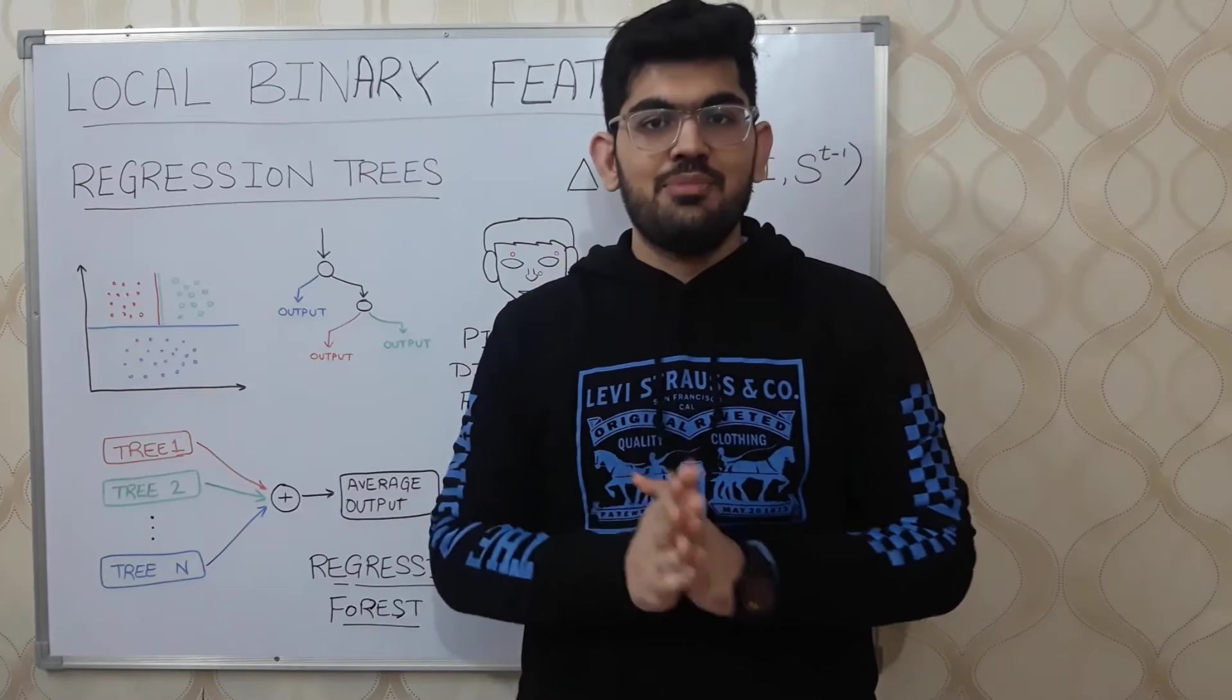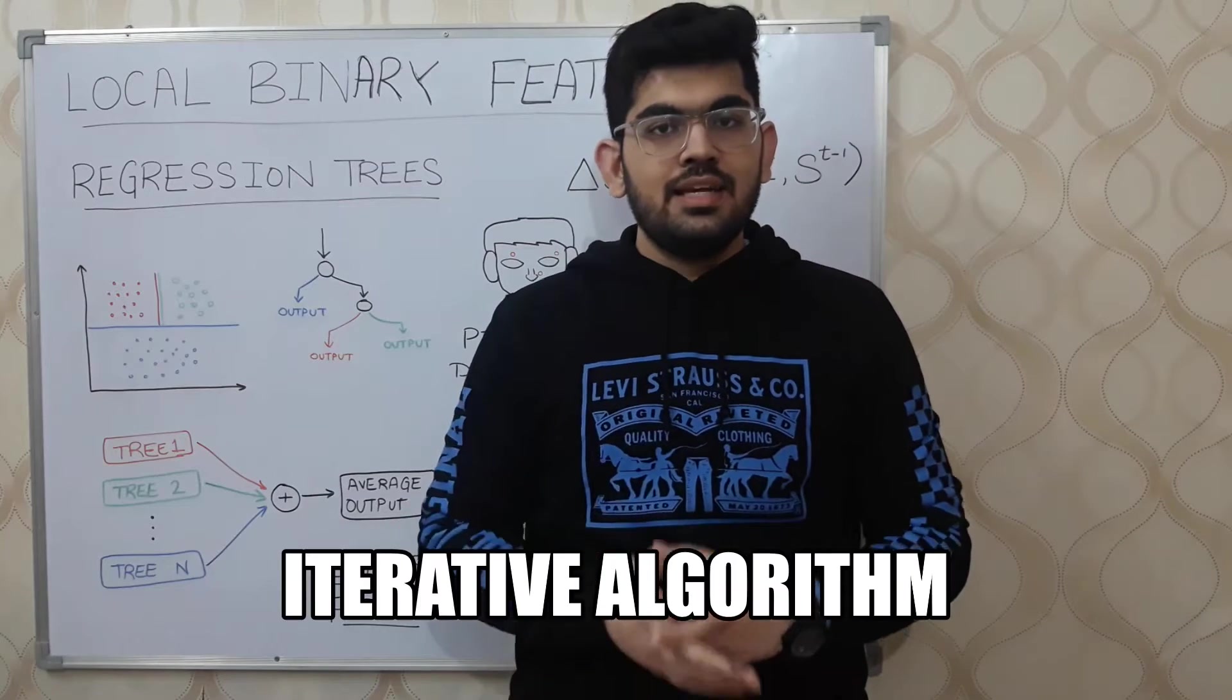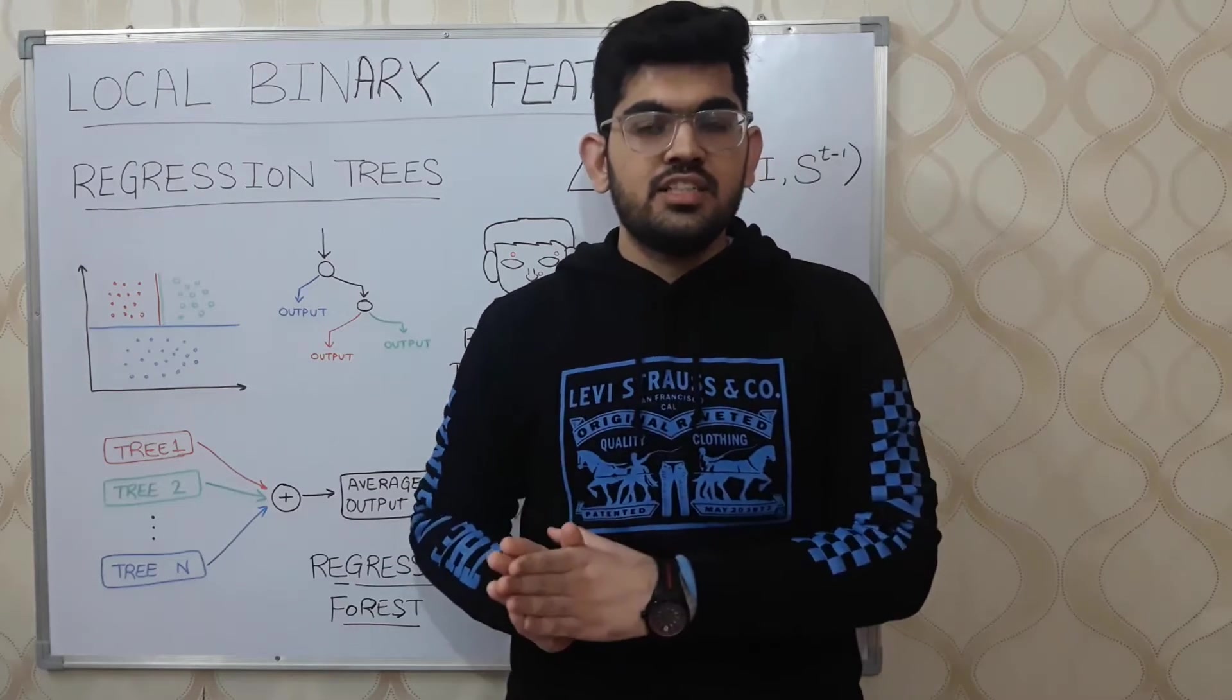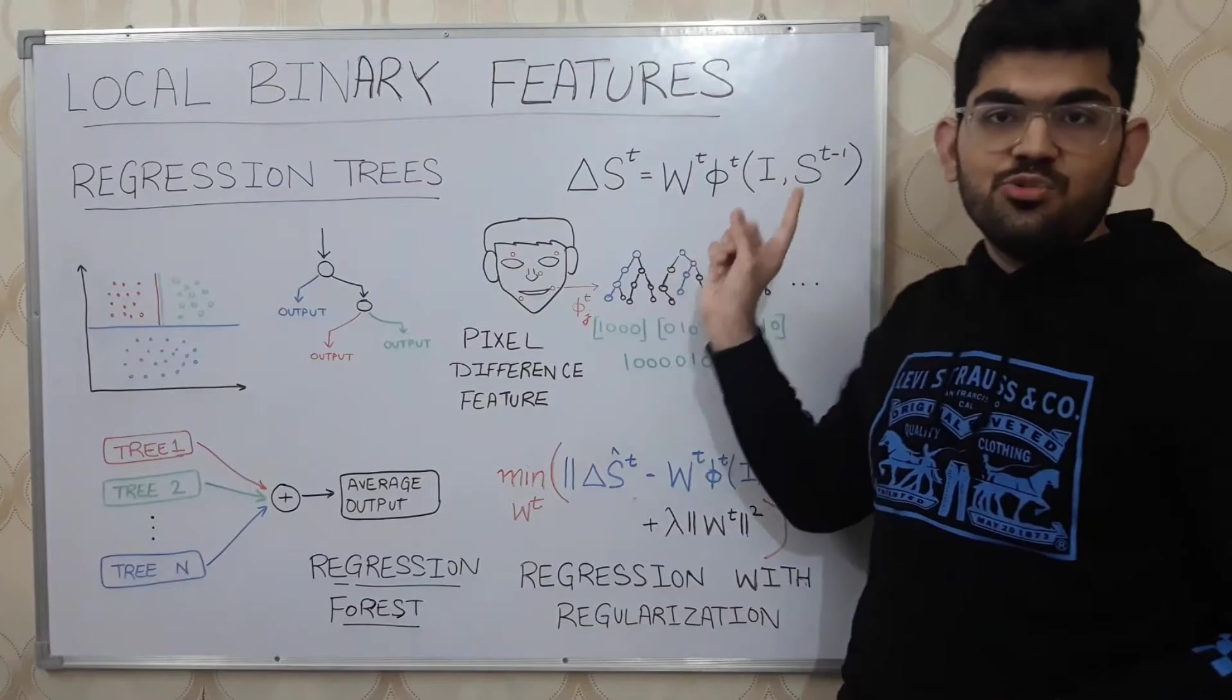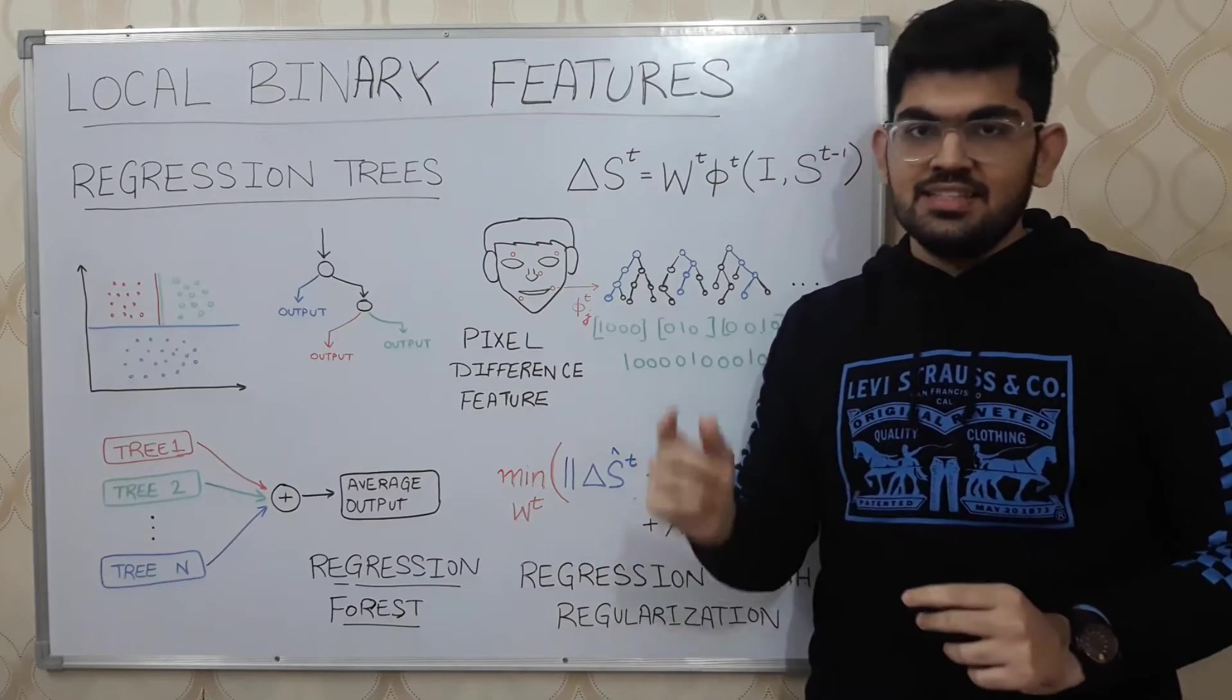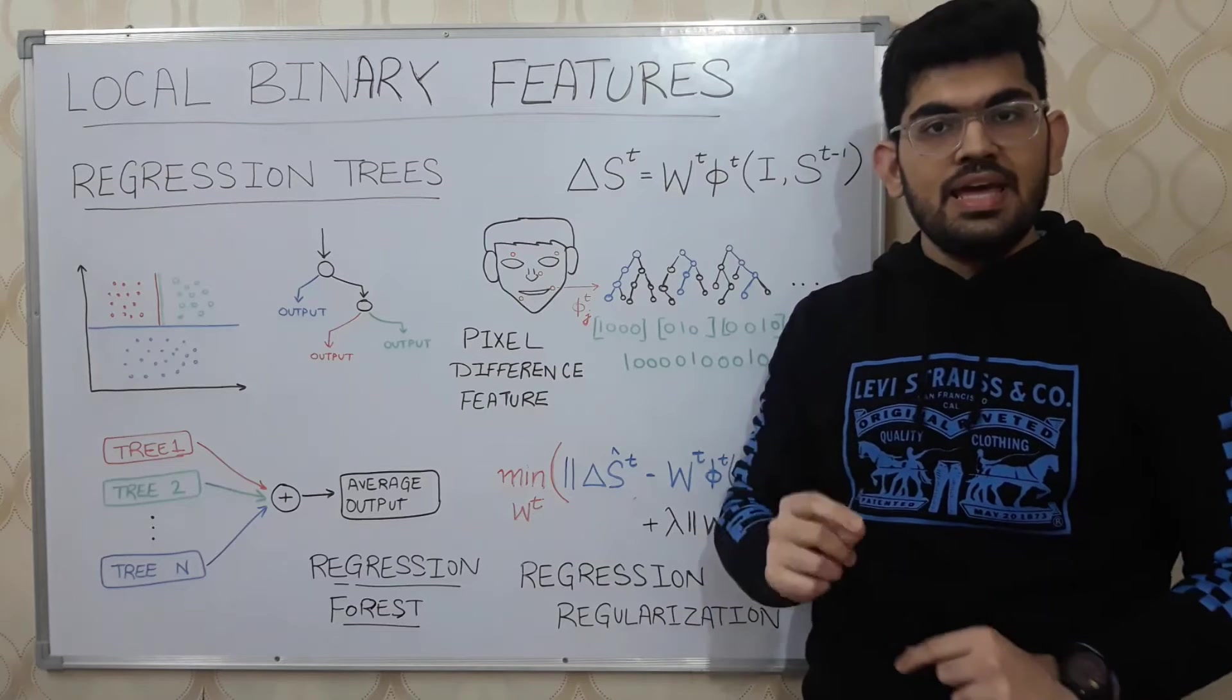Now we are going to discuss facial landmark detection using local binary features. One particular technique that we use to detect facial landmarks is an iterative algorithm. In such an algorithm, we iteratively do computations on a given expression until we converge to a final solution. For the starting iteration, we take a guess of where the facial landmarks would be and those landmarks are denoted by S0.